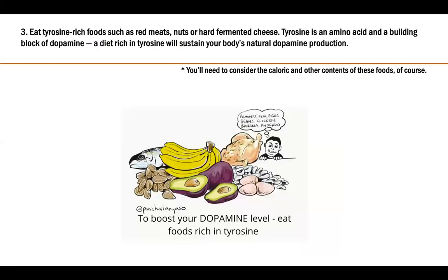Tip number three: eat tyrosine-rich foods. Tyrosine is the molecule that gets converted into dopamine. Non-vegetarians can get it from red meats and hard fermented cheeses like Parmesan; vegetarians can get it from nuts, avocados, and bananas.